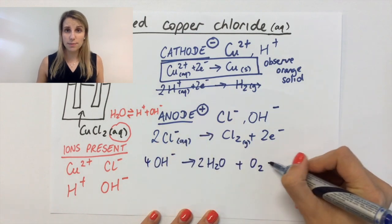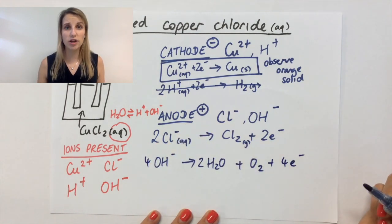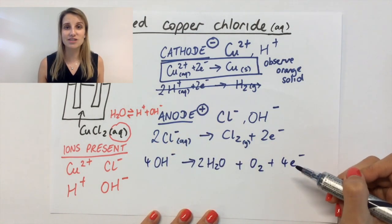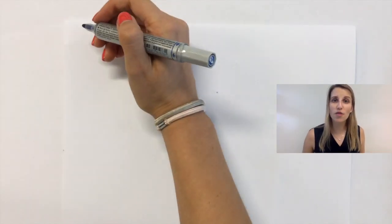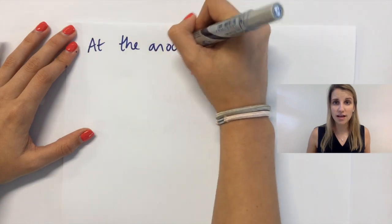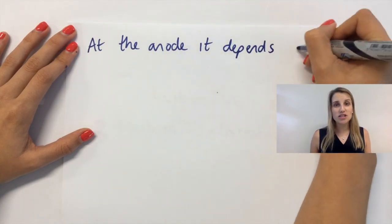The other option is the OH- kicks out some electrons to make water and to make O2. Now we need to work out how to make the decision here between which of these two ions gets oxidized in this case. At the cathode, it depended on the reactivity of the substance. At the anode, it depends on the concentration.